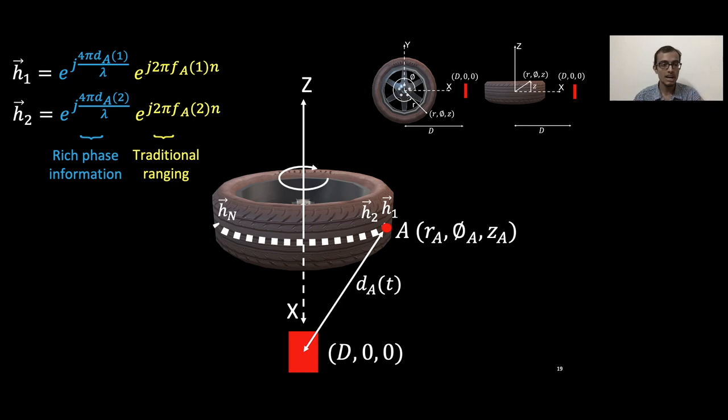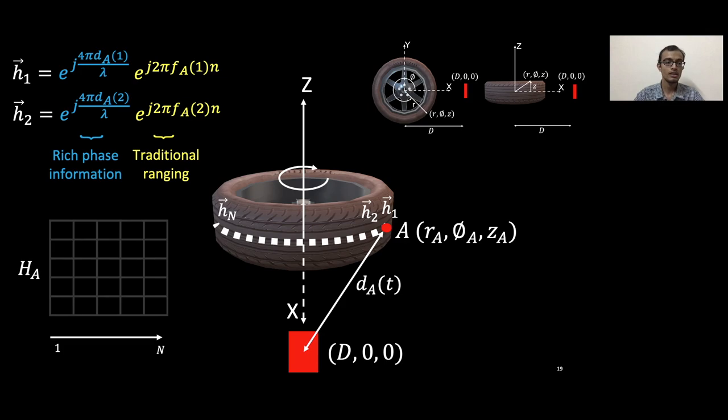By simply arranging these vectors which we get from 1 through n as the point rotates around the tire into this matrix, we have a representation for signals obtained from this particular point of the radar.